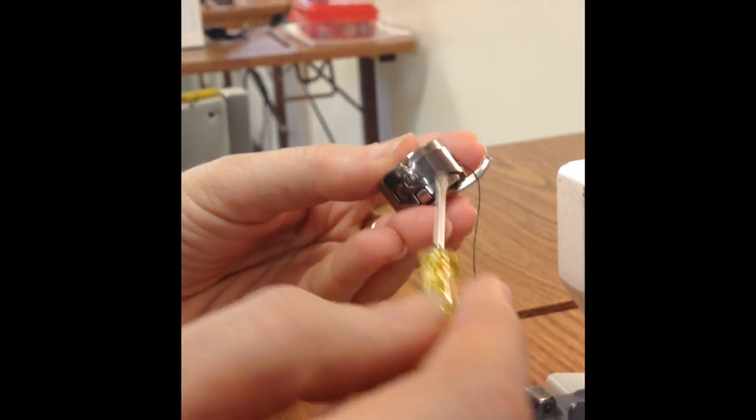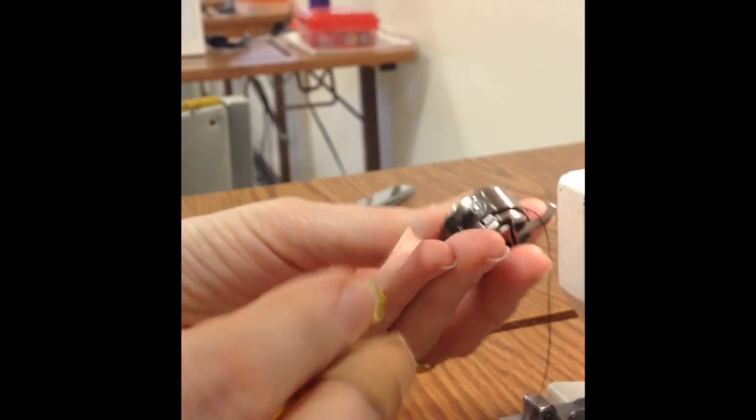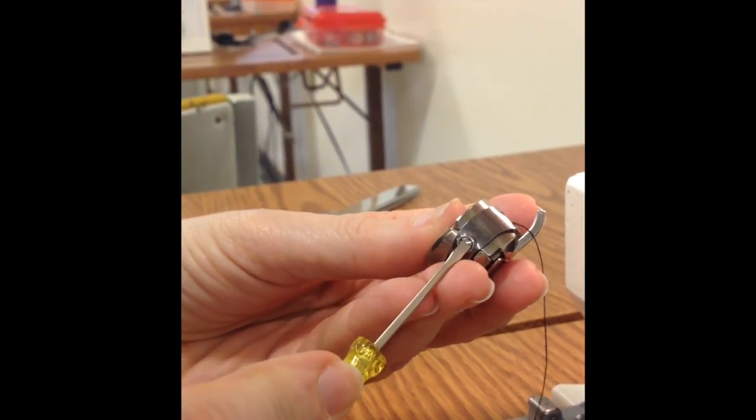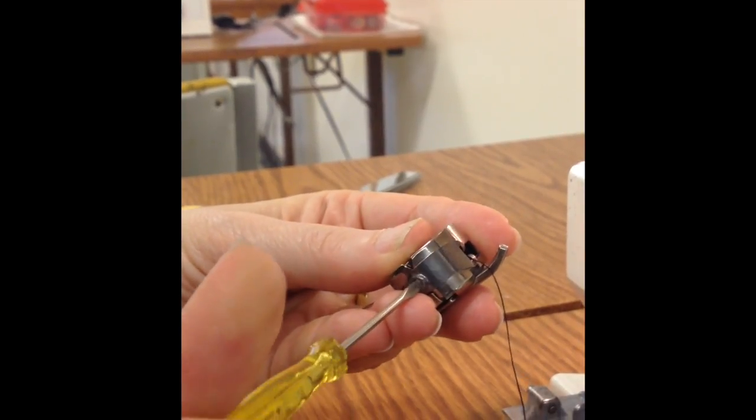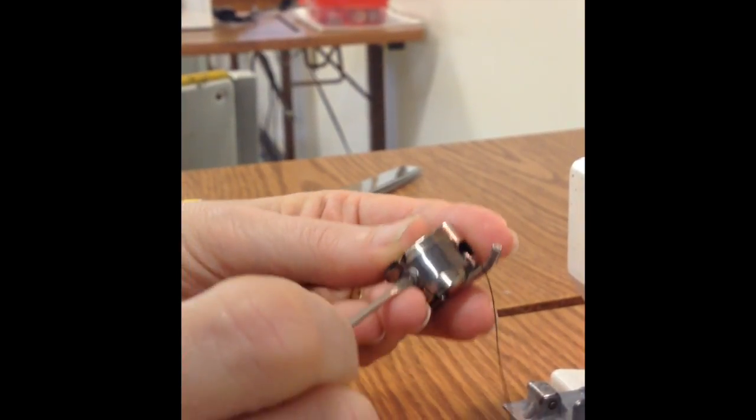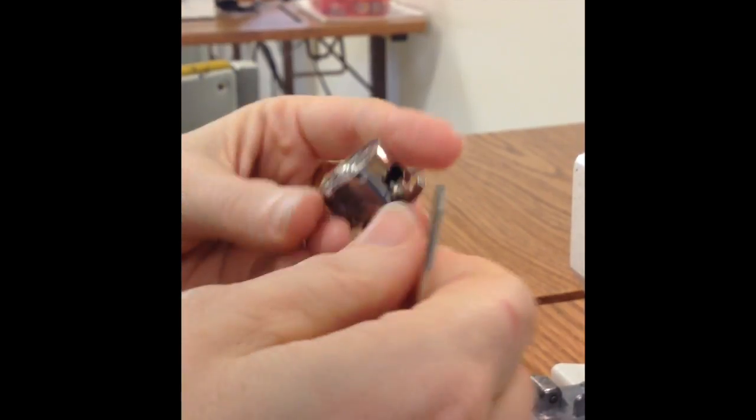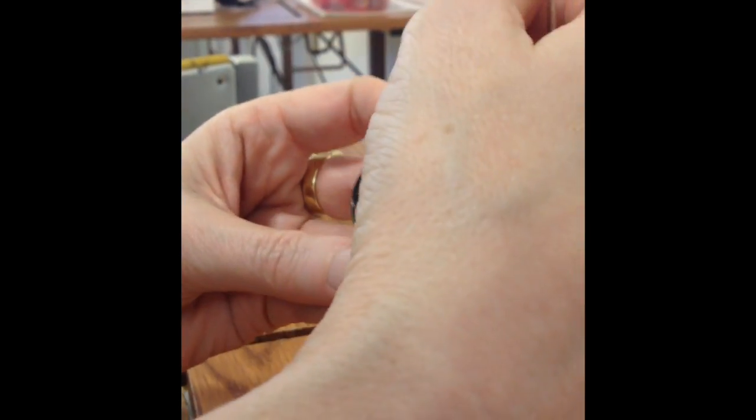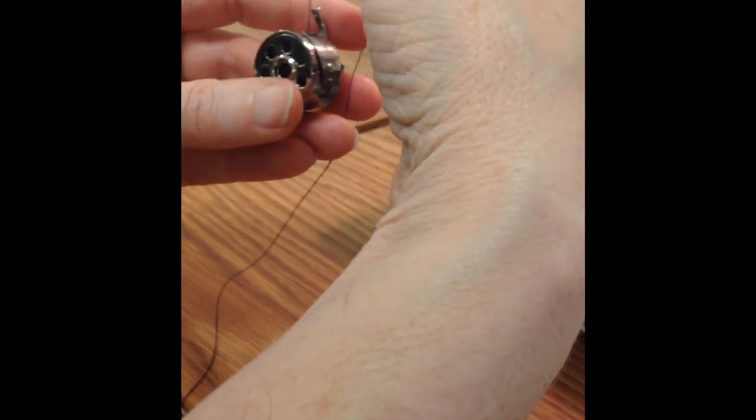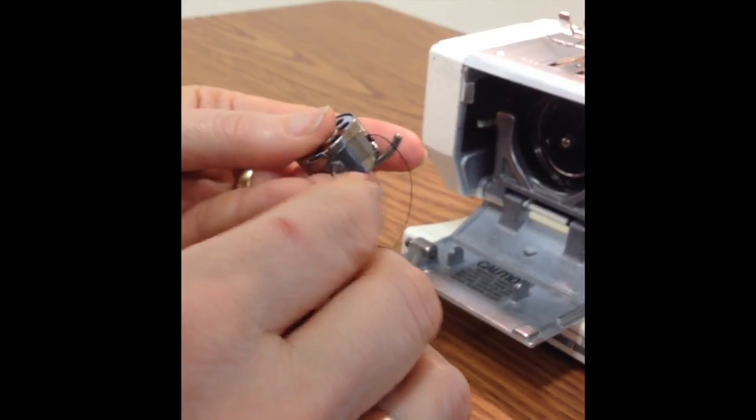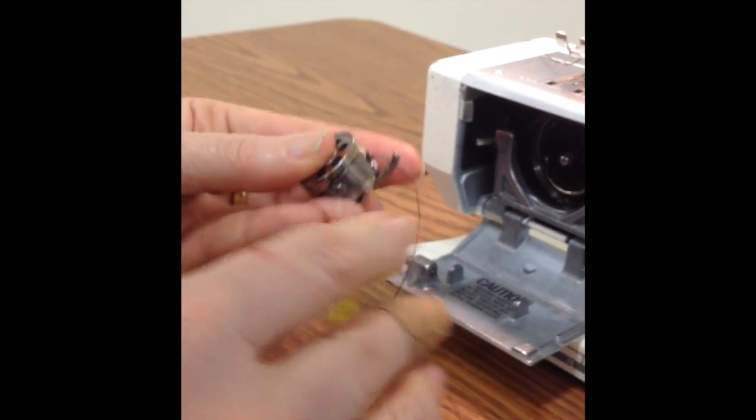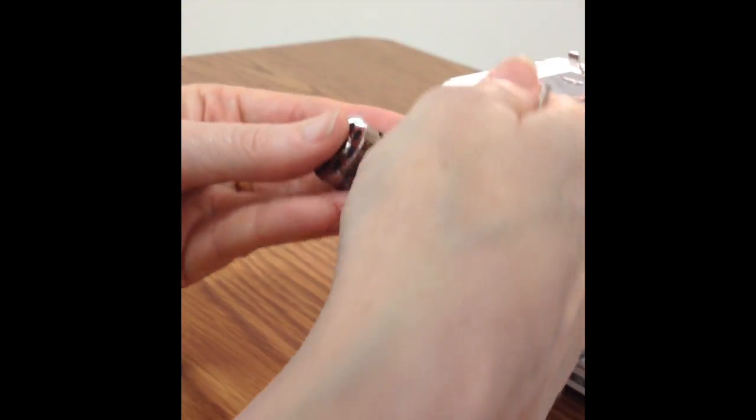If the bobbin tension is too loose, there's a small screw right here that needs to be tightened. Remember righty tighty, lefty loosey. Tighten that until the bobbin can hold itself, the thread can hold the bobbin up but it needs to be able to slip. If it just stays stationary, you know that you have tightened it too much.